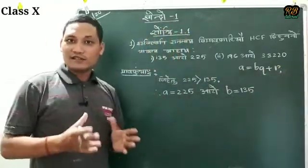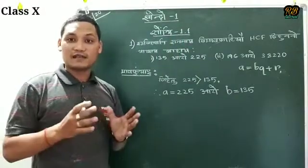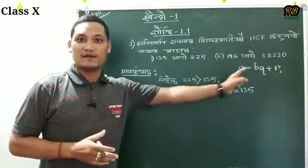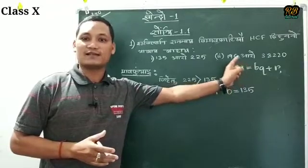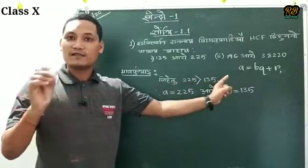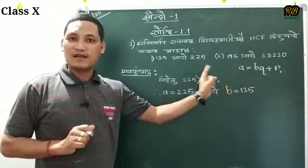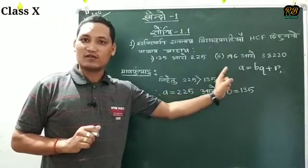You need Euclid's division — the formula is: a equals to bq plus r. That A is given, and that B is given.